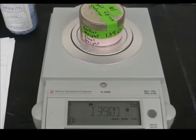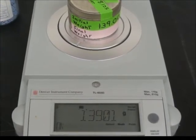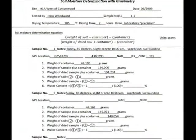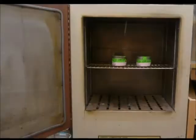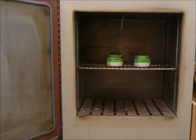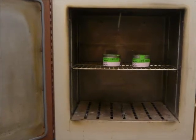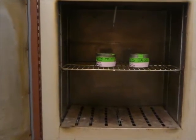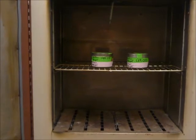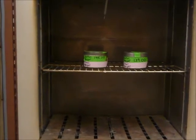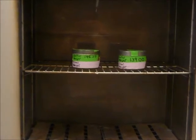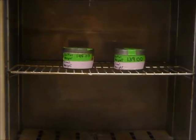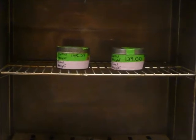Ensure that both the soil container and the datasheets are properly labeled. Place the samples in a preheated oven of 105 degrees Celsius for 24 hours. Depending on the initial soil moisture, the rate may be reduced. A microwave may be used for a rough soil moisture estimate; however, microwaves will oxidize organic matter leading to a weighted soil moisture bias.